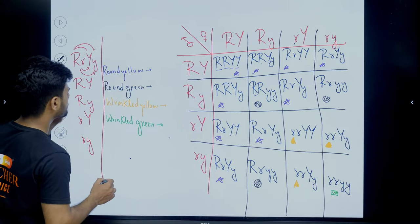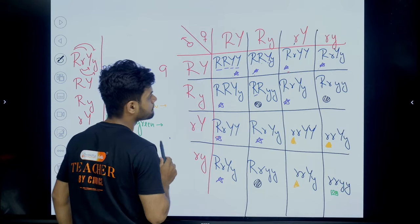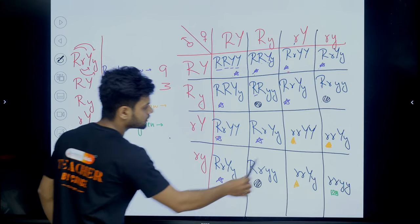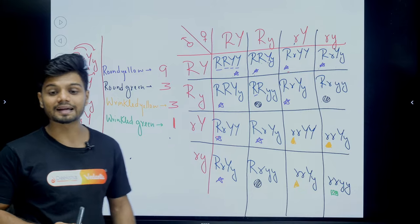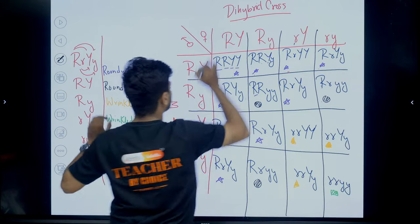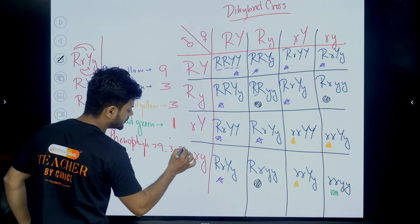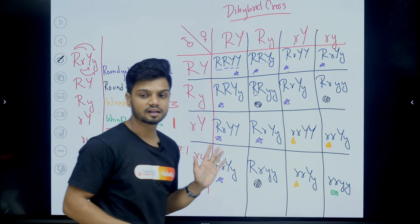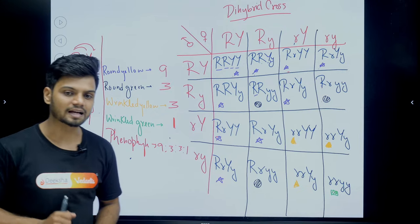Let's count the results. Round and yellow: 9. Round and green: 3. Wrinkled and yellow: 3. Wrinkled and green: 1. In the case of the dihybrid cross, the phenotypic ratio is 9 is to 3 is to 3 is to 1. That is: 9 round yellow, 3 round green, 3 wrinkled yellow, and 1 wrinkled green. The genotypic ratio (1:2:1:2:4:2:1:2:1) is not in your syllabus.